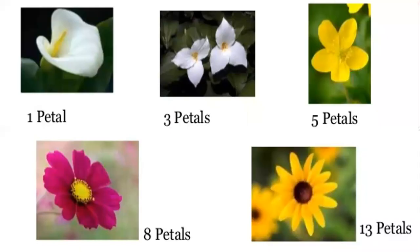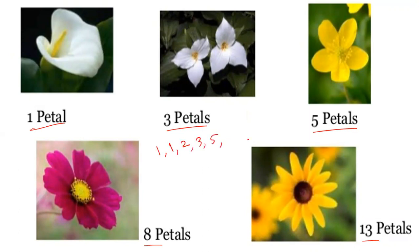Here are some examples. In this flower there is only 1 petal. Here there are 3 petals. In this flower there are 5 petals. Here 8 petals, and here 13 petals. All are Fibonacci numbers: 1, 1, 2, 3, 5, 8 and so on. All these flowers are maintaining the Fibonacci sequence.